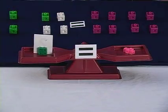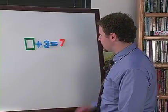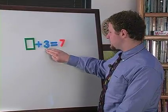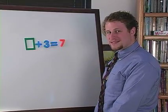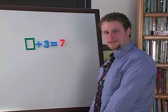Now that I've solved this problem on the balance, I can do it on the board. So I have box plus 3 is equal to 7, and I want to find out what's inside of the box. Well how did I do it on the balance?